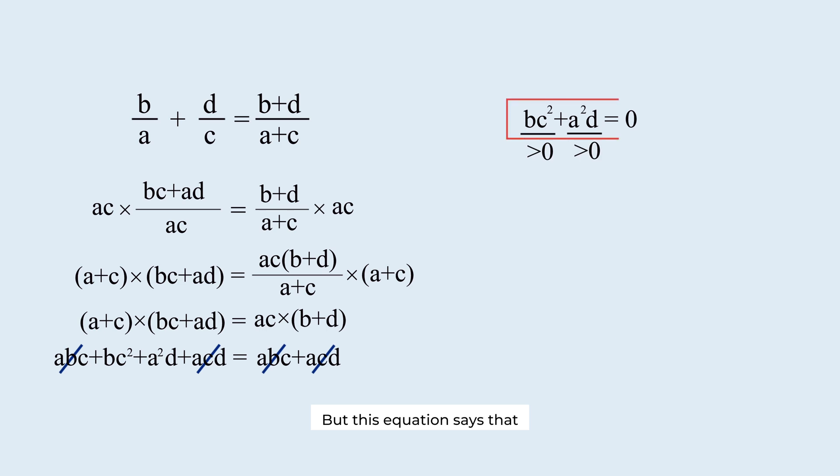But this equation says that the sum of two positive numbers must also equal 0. Is that even possible? No, it's not. This equation is always greater than 0.